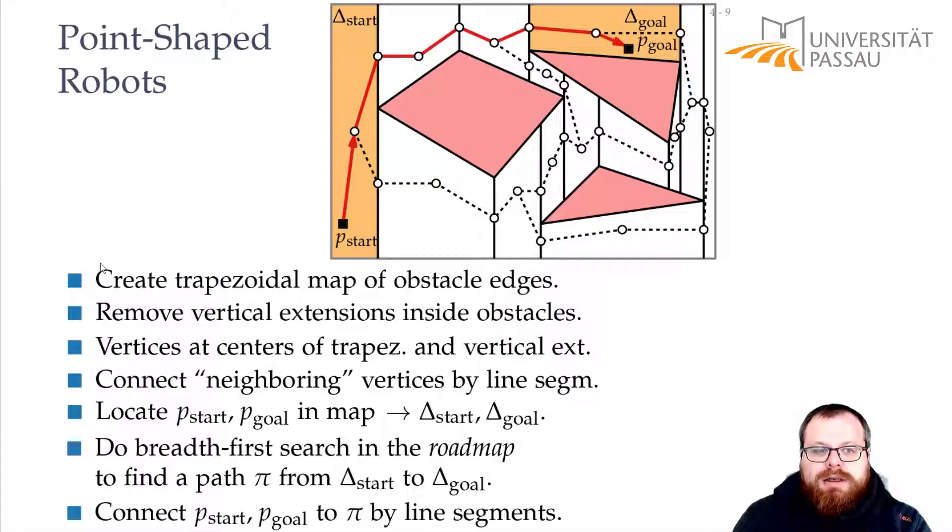How much time does this take? We know that we can create a trapezoidal map in order of n log n time. We can remove these vertical extensions clearly by just looking at each of them. Does it lie in this obstacle? In order of n time. We place the vertices at the centers of trapezoids. That's one vertex per trapezoid, one per vertical extension. The complexity is linear, so this is again linear. And at the same time, we can connect the neighboring vertices by line segments.